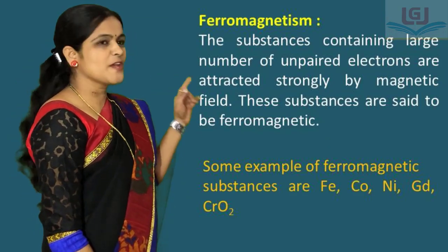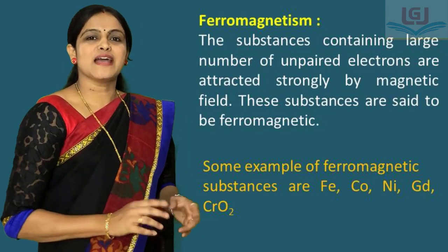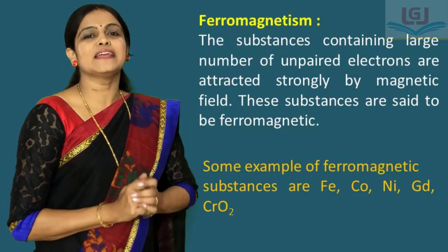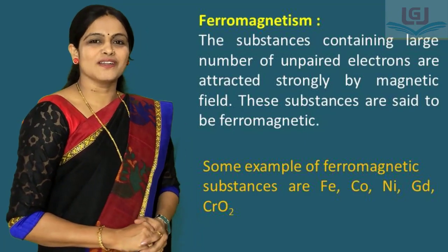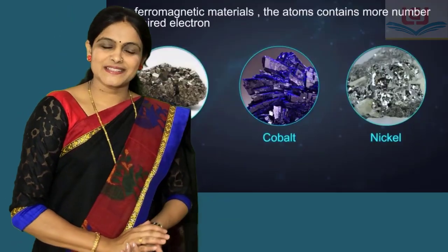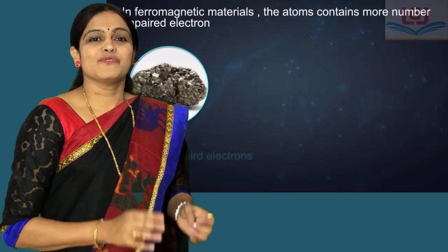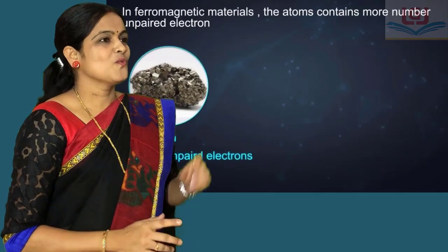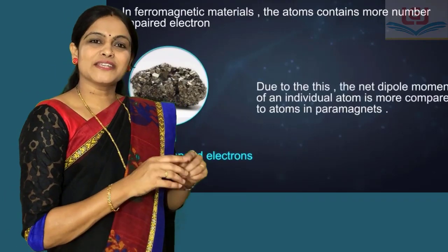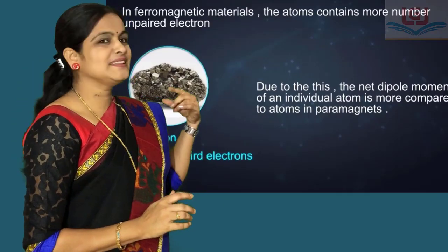The next type is ferromagnetic solids. The substances which consist of a large number of unpaired electrons and are strongly attracted by a magnetic field are called ferromagnetic substances. For example, iron, cobalt, and nickel — iron has 4 unpaired electrons. One unpaired electron interacts with neighboring electrons strongly and aligns them in the same direction. This group of aligned electrons is called a domain.